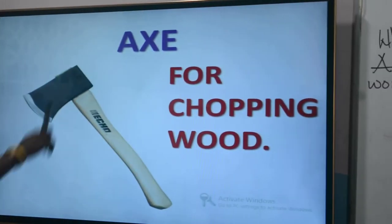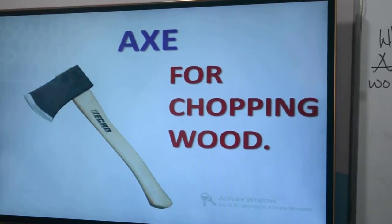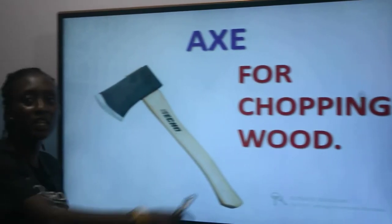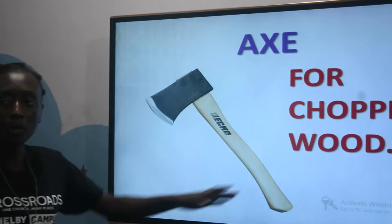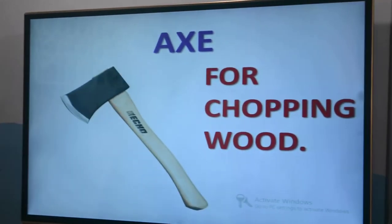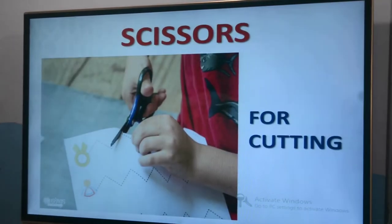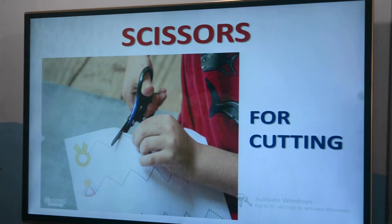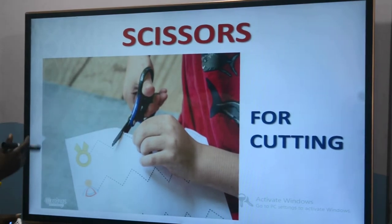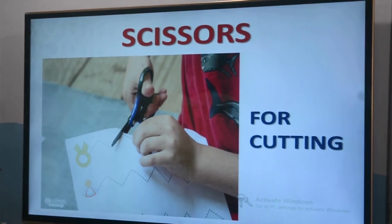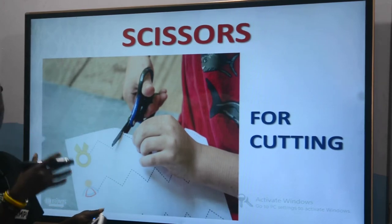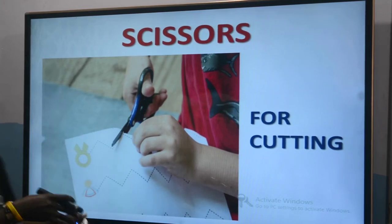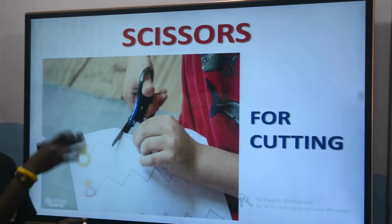We have an axe. This is how an axe looks like. It is used for chopping wood. We have the scissors. You can see that the kid in this image is using the scissors for cutting. So the scissors is used for cutting.